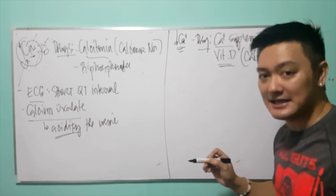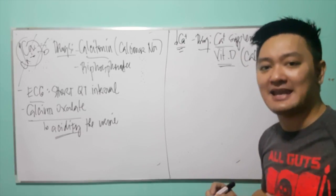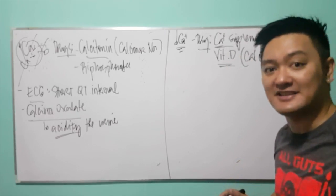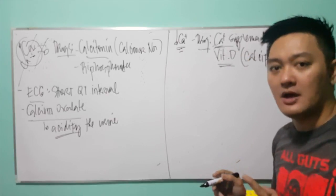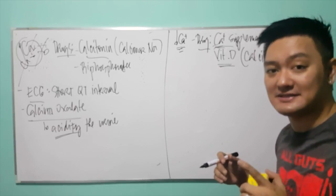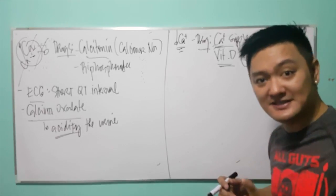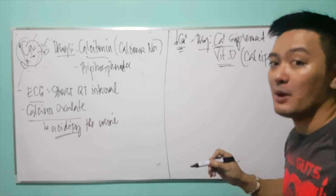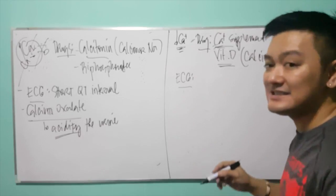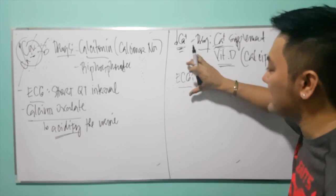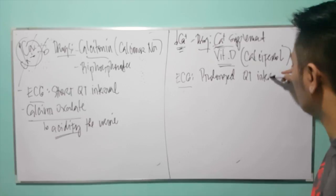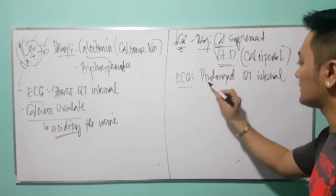Vitamin D enhances calcium absorption. With respect to calcium supplementation, a normal average person requires at least 1,000 mg of calcium per day. But if you are pregnant, you have to increase that from 1,000 to 1,500 mg per day. A patient with hypocalcemia will have a prolonged QT interval on ECG — do not forget this.